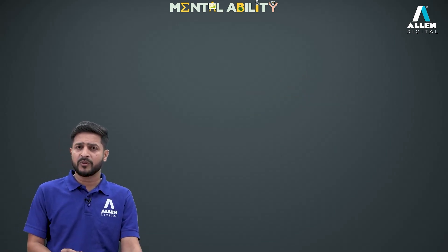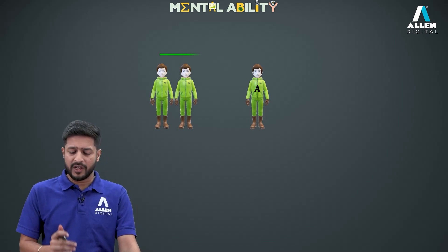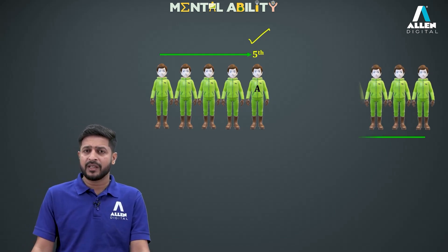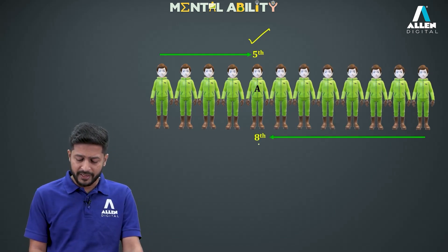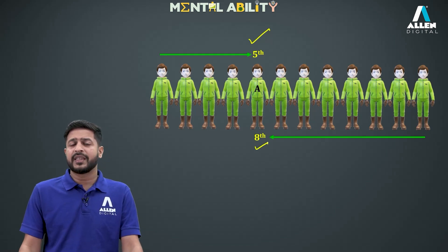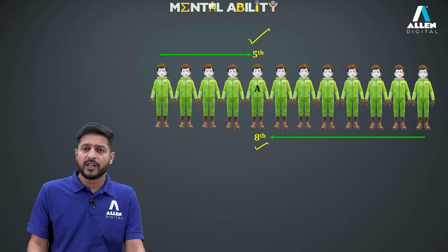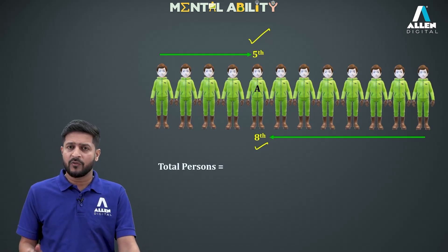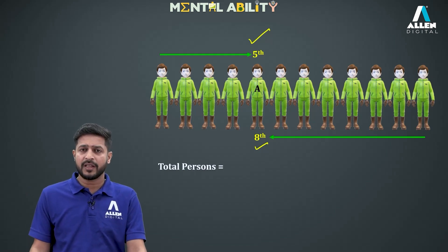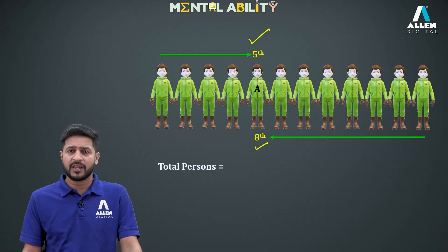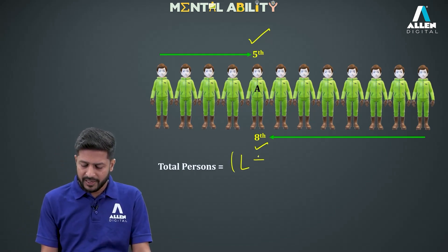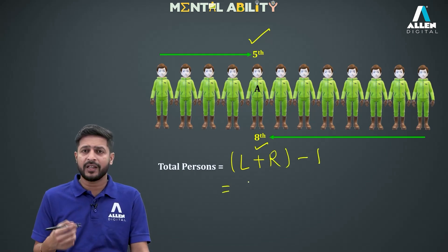There is one person A whose rank from the left end is given as 5th, and the rank of the same person A from the right end is given as 8th. The question can ask: what is the total number of persons in this line? To find the total number of persons when the rank of one person is given from both ends, we use the formula: rank from left + rank from right − 1.